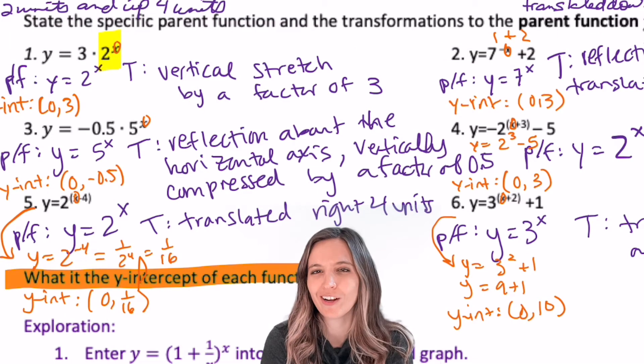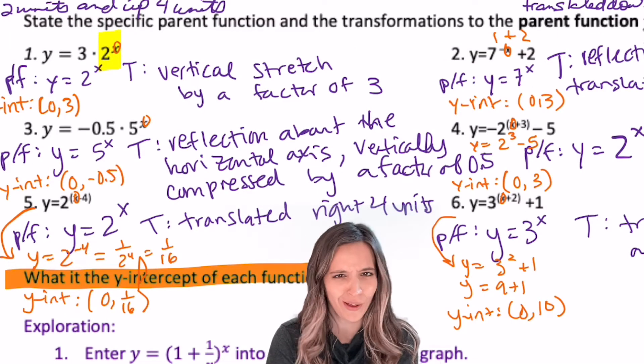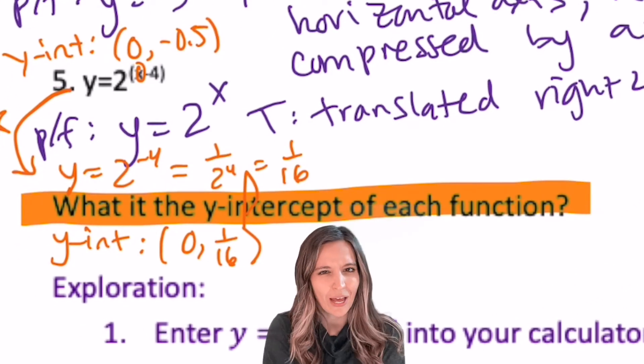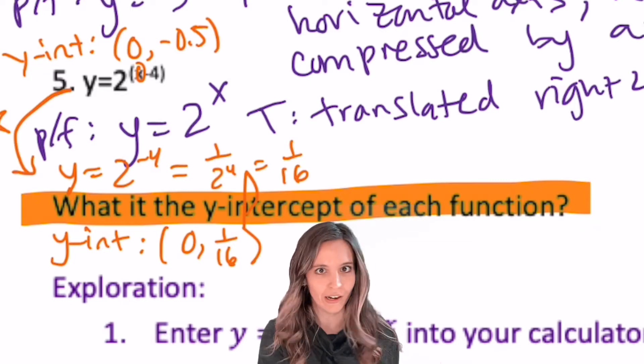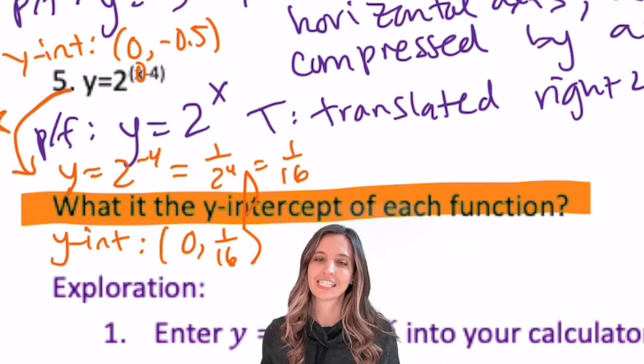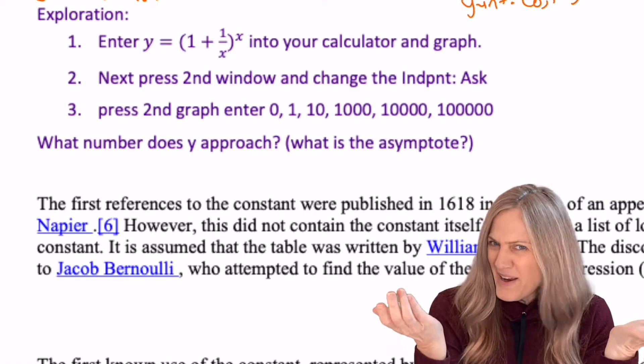Were you able to find all those y-intercepts? I know it was a tight squeeze, but we got them, right? Check out 5. Did you catch that? It ended up being 2 to the negative 4. Well, we know that that's just 1 over 2 to the 4th, right? So 1 over 16.